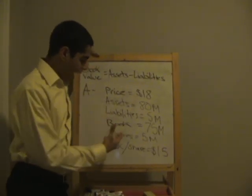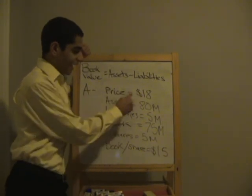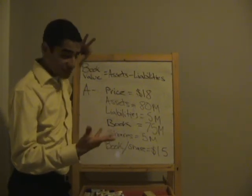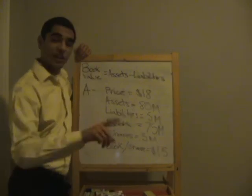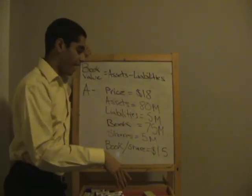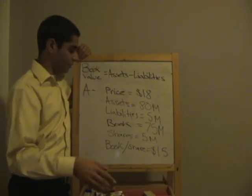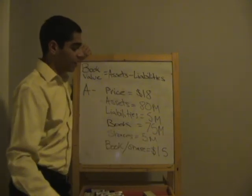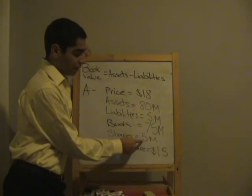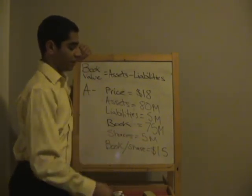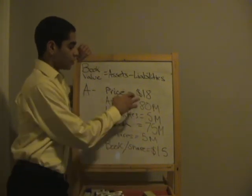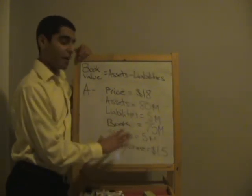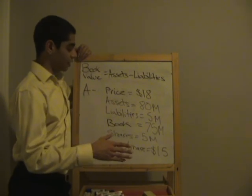So you are paying $18 a share for a company that is essentially worth $15 per share. If they closed down tomorrow, sold everything they had, and paid off all their debt and mortgage payments, they would have $75 million — but that $75 million is not owned by one person, it's owned by 5 million shareholders. Divide that by 5 million and you get $15. So you're paying $18 for a company essentially worth $15.